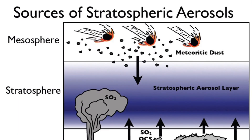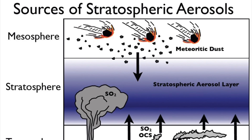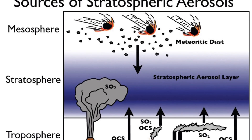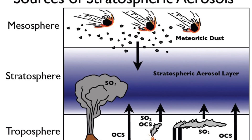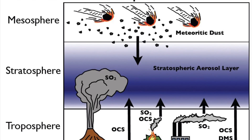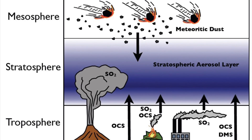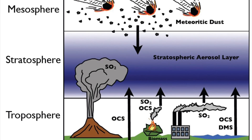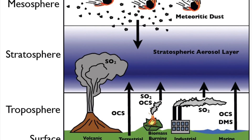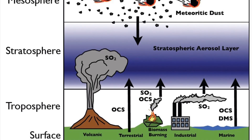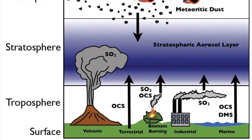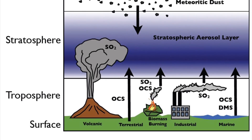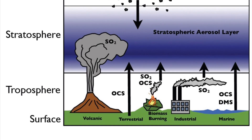As this image pans down, you can see some of the sources of stratospheric aerosols. Starting at the mesosphere, you have meteoritic dust, which travels into the stratospheric aerosol layer and gets suspended there, as shown in the blue ombre layer. Panning to the bottom, you can see things such as the burning of fossil fuels, volcanic eruptions, and many other things that contribute to the suspension of the stratospheric aerosol layer.